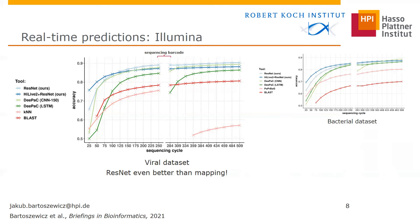Our approach works well for both novel bacteria and viruses, outperforming alternatives based on both machine learning and sequence homology detection. To our surprise, for viruses the ResNet performs even better than mapping, even on reads that can be successfully mapped to their closest reference genomes.